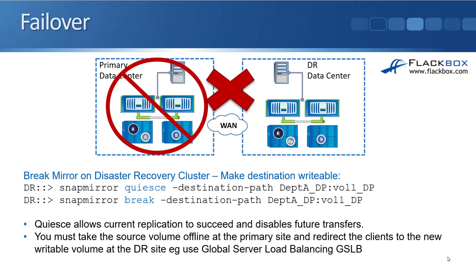Let's look at what to do if our main site goes down and we want to fail over to the DR site. These commands are all done on the destination site, which is a good thing — if we've lost the source site it's not there anymore so we wouldn't be able to run commands on it. The first command is SnapMirror quiesce, specifying the destination path. What this does is allow a current transfer to complete but stop future transfers.